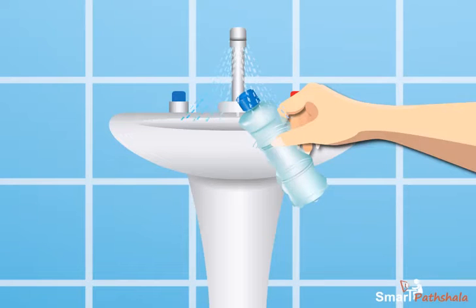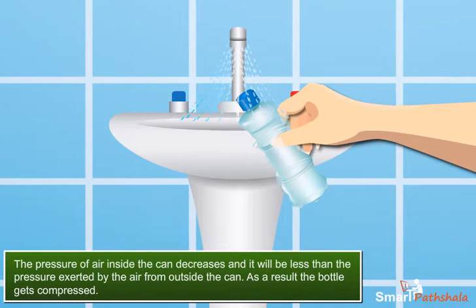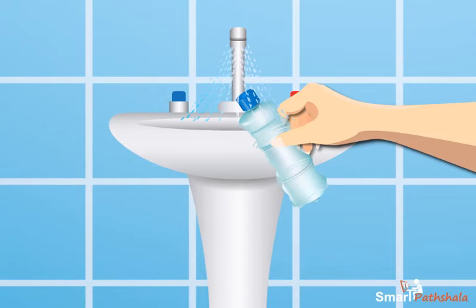Now let us try to know the reason behind the distortion of the shape of the bottle. As water is poured over the bottle, some steam in the can condenses into water, reducing the amount of air inside. The pressure of air inside the can decreases and it will be less than the pressure exerted by the air from outside the can. As a result, the bottle gets compressed. From this activity we can confirm that air exerts pressure.